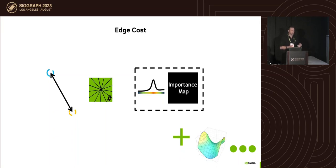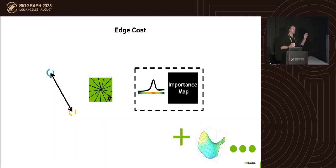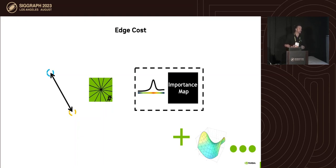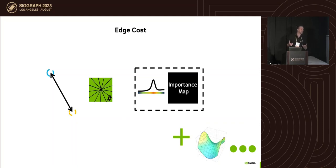So the edge cost criteria we consider are: edge length, whether collapsing would result in high valence, and the importance map or curvature information gathered via hardware ray tracing. These are arbitrary choices — you can also use quadrics and other criteria. There are no strict rules for edge collapse decisions; it's quite flexible, like cooking.